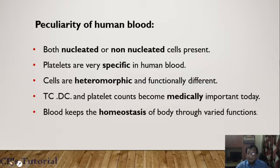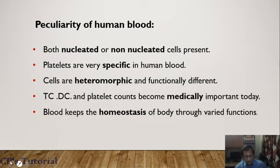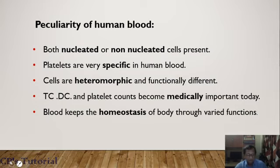It is questionable why human blood has been selected for identification. I would like to mention some peculiarities of human blood. It has two types of cells — nucleated and non-nucleated. It has a peculiar substance, platelets (thrombocytes), which is very specific to human blood. The cells are also of different forms, meaning they are heteromorphic in character, yet function differently.